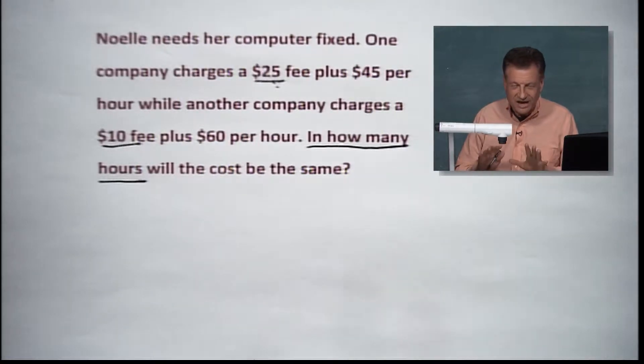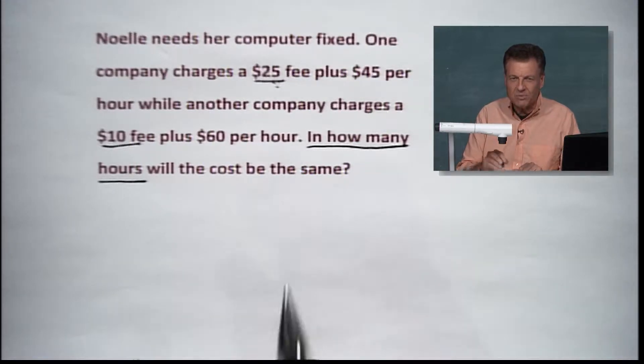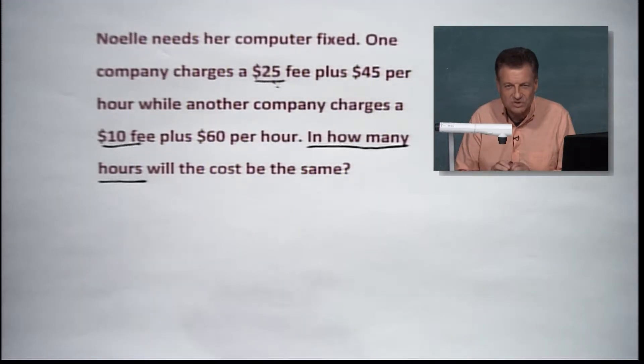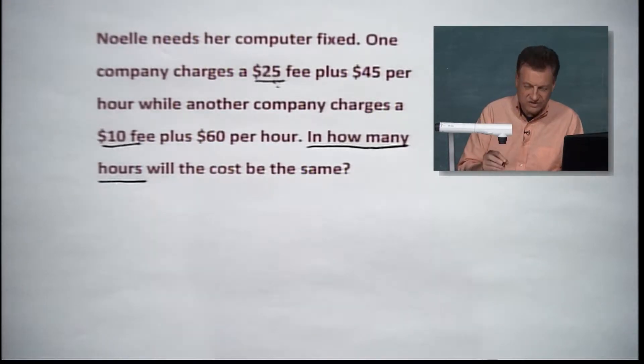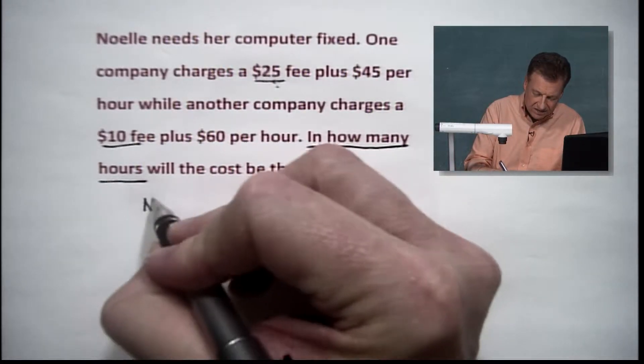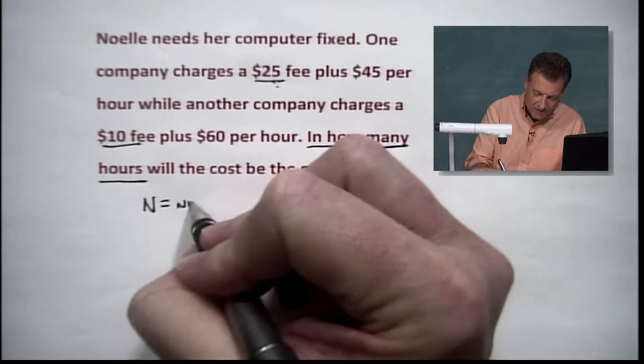So you get what's going on here? One is probably better than the other until you get to this break-even point, then it's going to shift. So let's see what we've got going on here. First of all, N. How about it? For the number of hours.